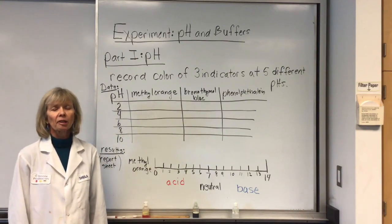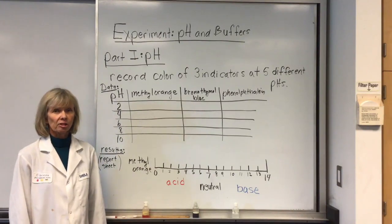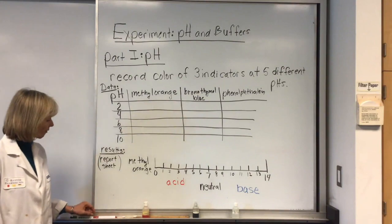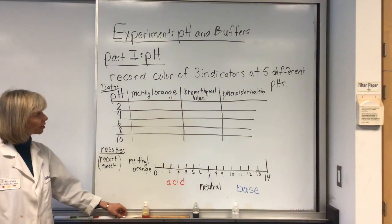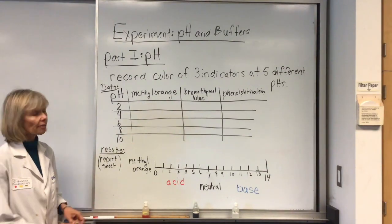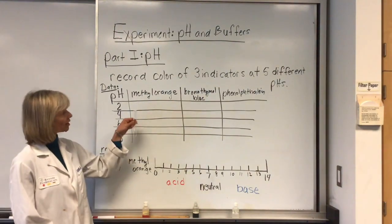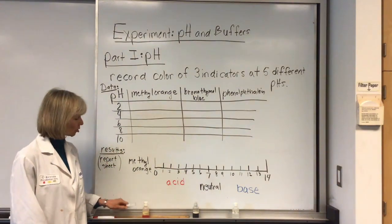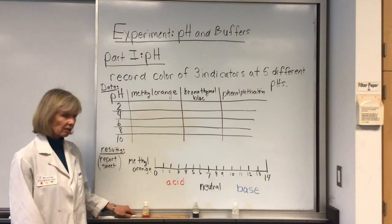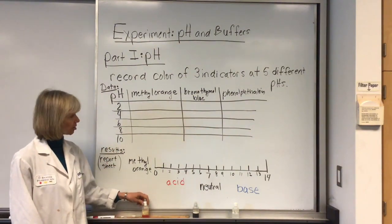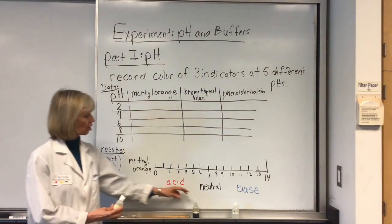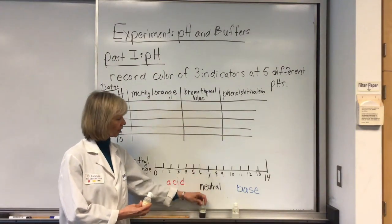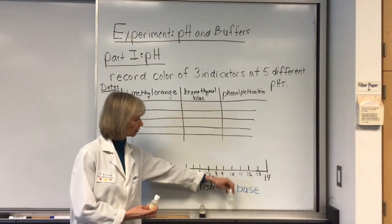Today's experiment is on pH and buffers. The first part is on pH. You will have five different solutions of known pH that you will put in a test tube. You're going to be adding color indicators to the test tubes. The color indicators are methyl orange, bromthymol blue, and phenolphthalein.